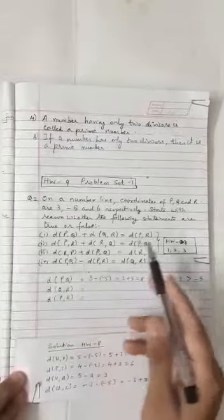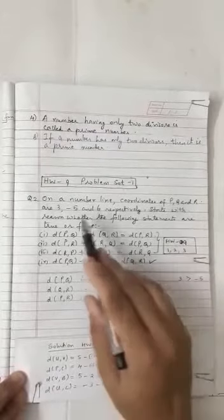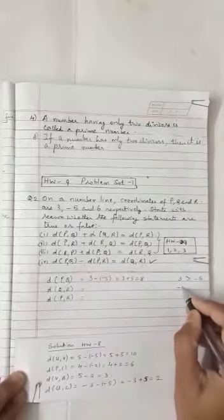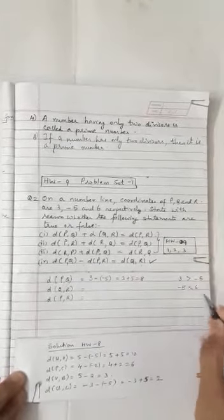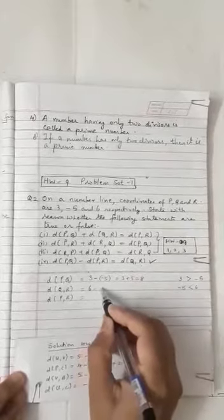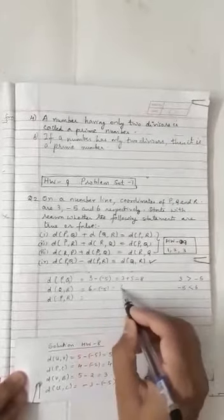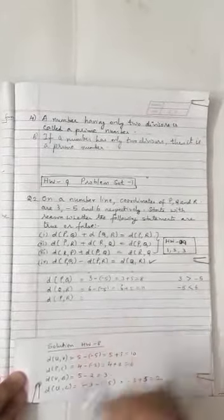Let us find distance QR. Q is minus 5 and R is 6. So 6 plus 5 which is equal to 11.